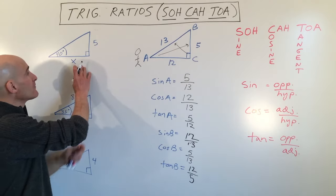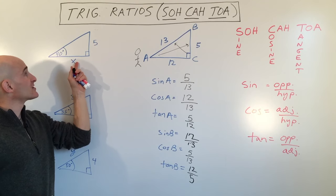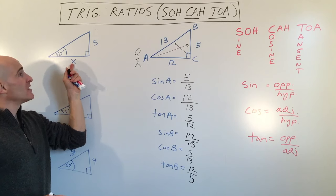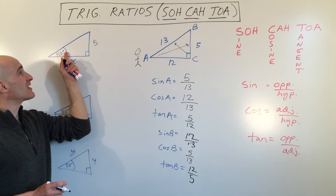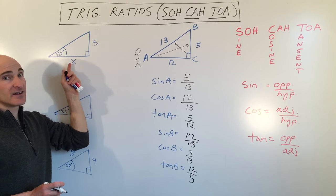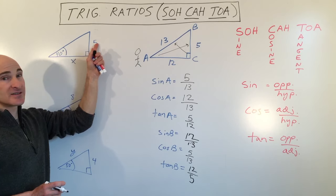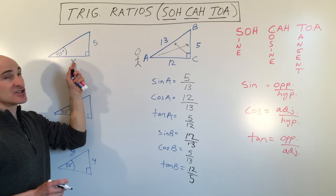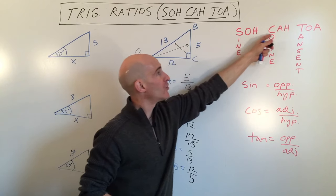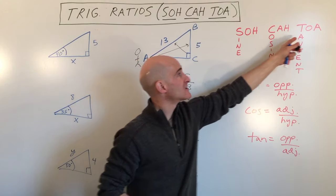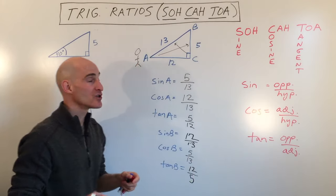Here we have a right triangle with a 40-degree angle, and we want to solve for the missing side x. We need to ask: what trig function ties together this angle and these two sides? If you're at this angle, this is the opposite side and this is the adjacent side. Looking at SOHCAHTOA, opposite and adjacent means we use the tangent ratio.